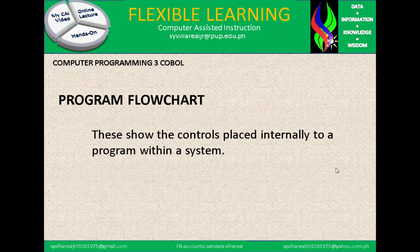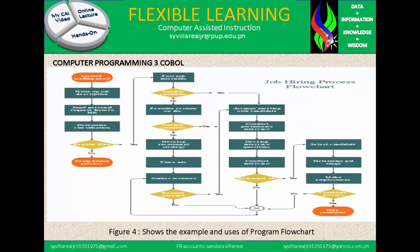Program flowchart: this shows the controls placed internally to a program within a system. In figure 4, the example is a job hiring process program flowchart. There are many steps to consider when making a complete program flowchart, but if handled part by part, you can finish it easily.